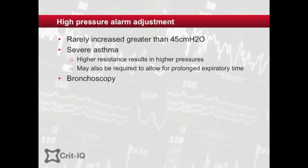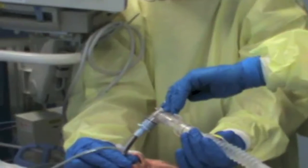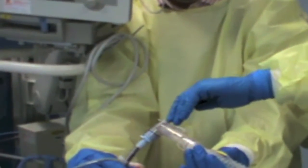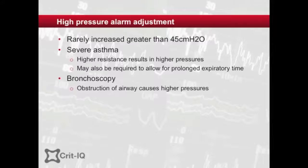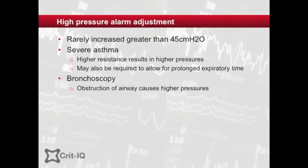The high pressure alarm is also increased when performing a bronchoscopy. The presence of the scope in the airway significantly contributes to resistance, increasing pressure in volume-controlled modes. If the pressure alarm is not increased, the ventilator will cycle to expiration, under-ventilating the patient. Care should be taken to ensure that the alarm is returned to normal after the procedure.